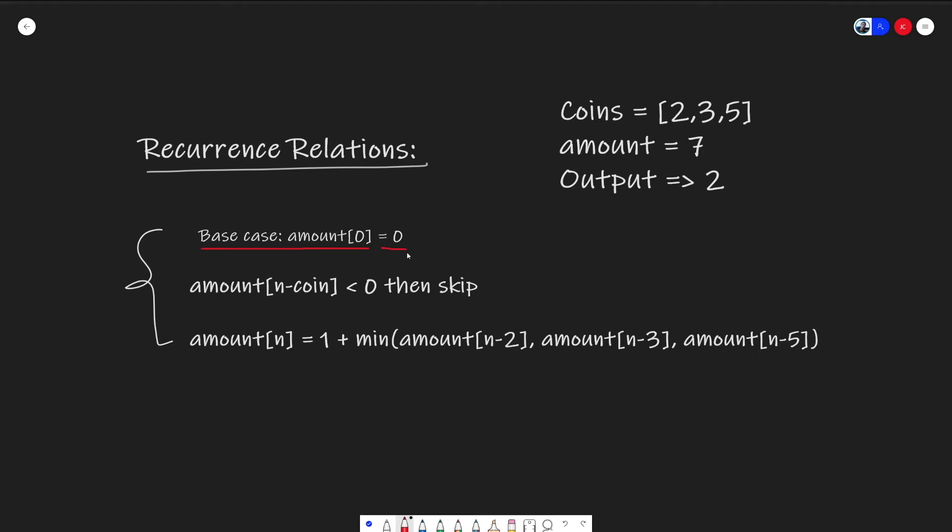To build up to our answer, we're going to slowly build from solving zero change all the way to our amount, which is seven. So to demonstrate the next step, our goal is to solve for amount at one. So how many coins can we make to solve amount one?